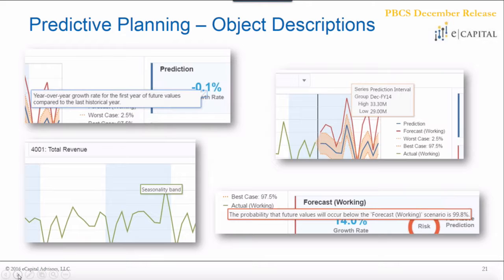Another useful feature in the predictive planning interface is that hovering over elements with your mouse provides dynamic descriptions. For example, hovering over the series prediction interval shows you the high and the low values. You can also get explanations of the growth rate, whether seasonality is included, and more detail around the risk component. This is very helpful for new users trying to adopt the tool, as displaying information dynamically is a definite win.